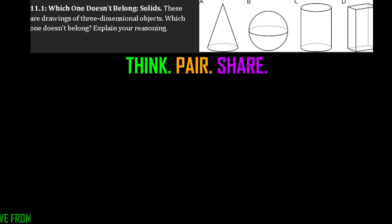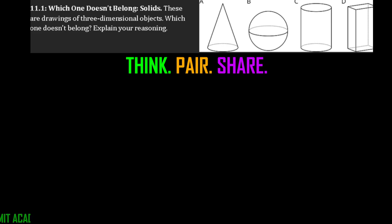So in the first one it says, which one does not belong? A solid — when you think of a solid, it's talking about a three-dimensional shape. So it says these are drawings of three-dimensional objects. Which one does not belong? Explain your reasoning. What I want you to do is think, pair, share.